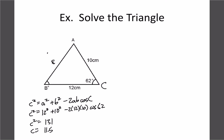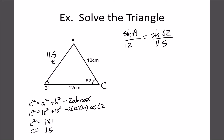Now that we have all three sides, we can use the sine law to find the remaining angles. For angle A: sin A / 12 = sin 62° / 11.5. Cross-multiplying: sin A = sin 62° × 12 / 11.5, and taking the inverse sine gives A ≈ 67°. For angle B, use the angle sum rule: 180° − 62° − 67° = 51°. The triangle is solved.